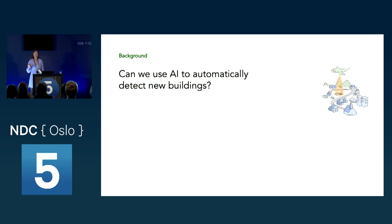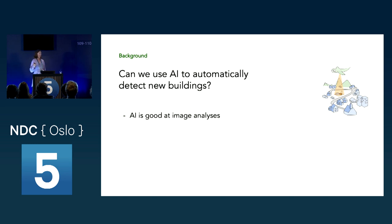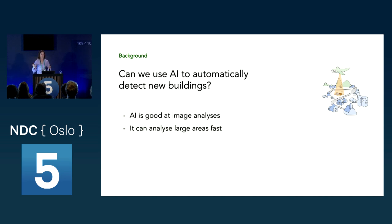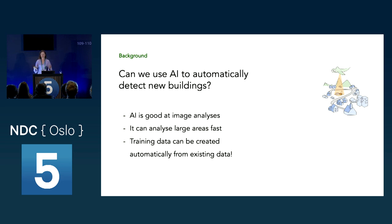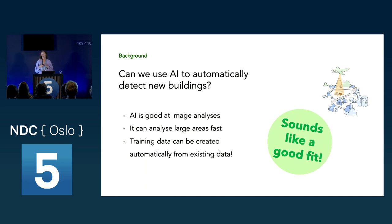This process of looking at aerial images for building changes is very time consuming, quite expensive, and you're not certain to find all changes. We need a better way to keep building data updated. AI is really good at image analysis, has been for many years, and it can analyze large areas fast. Training data can be created automatically from existing data — so this sounds like a good fit, and that's why we started this project many years ago.